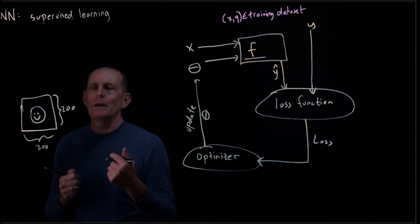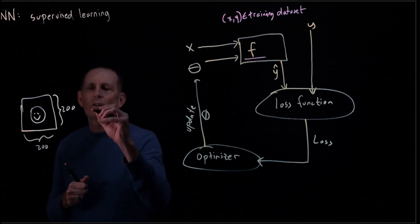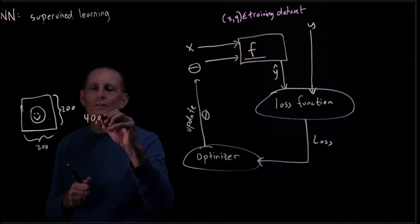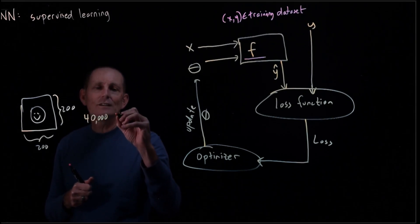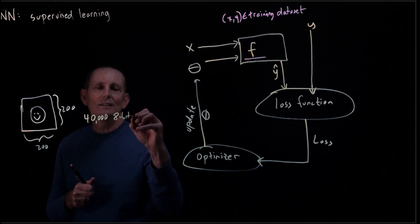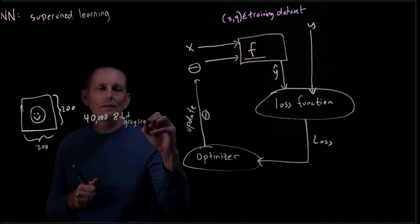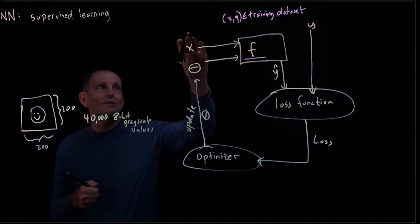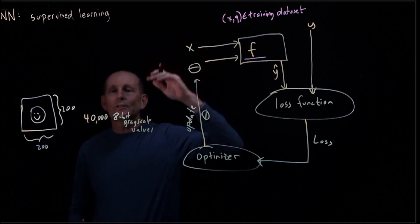I guess it'll really be a pixel map, but let's just call it a bitmap. So we could have 200 by 200, so 40,000, let's say 8-bit grayscale values. That could be the input, which is X here. So it's a big vector.